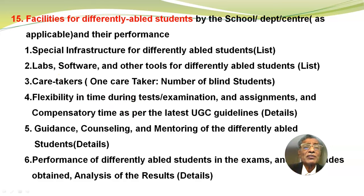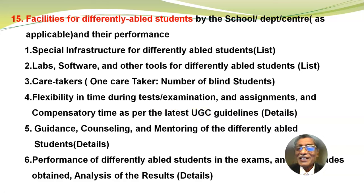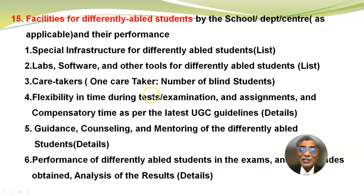Facilities for differently abled students — most important — by the school or department or center as applicable, and their performance. Special infrastructure for differently abled students, labs, software and other tools for differently abled students, caretaker ratio per blind students, flexibility in time during tests or examinations and assignments, and compensatory time as per the latest UGC guidelines. Always refer to the latest UGC guidelines. Guidance, counselling and mentoring of differently abled students, performance in exams and final grades obtained, and analysis of results.